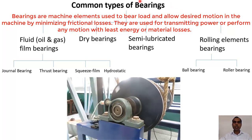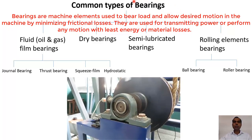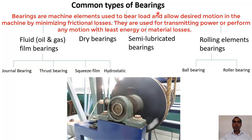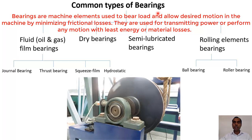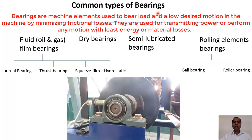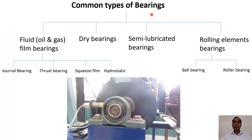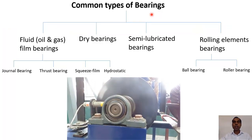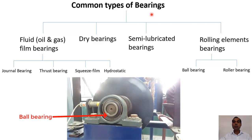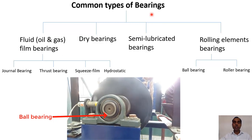Bearings are defined as the devices used to bear load and allow movement or power transmission in any kind of mechanical machine. So bearings are a very important part of mechanical machines. In this video I would like to talk about the types of bearings and how we can select bearings, on what basis we can select them.